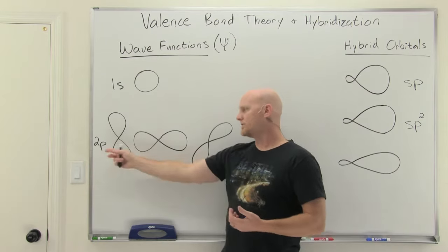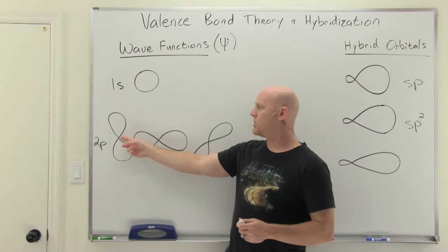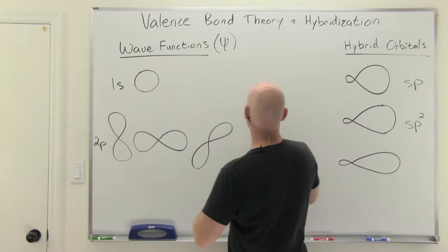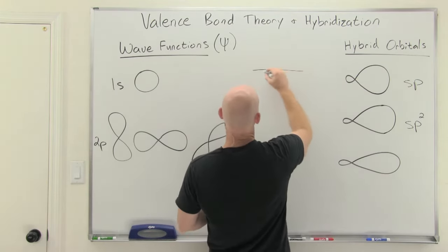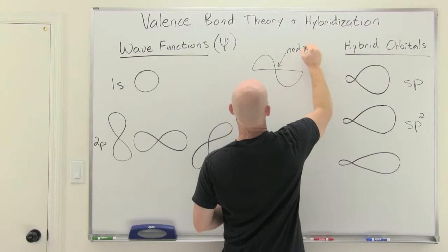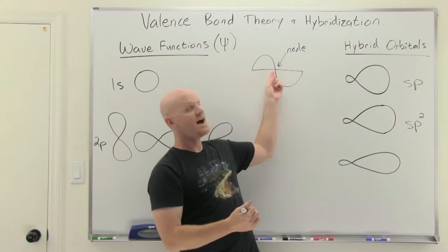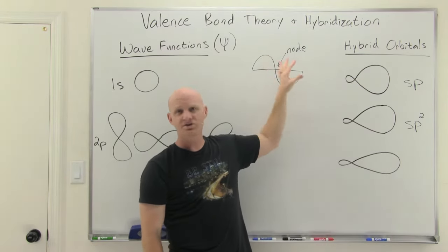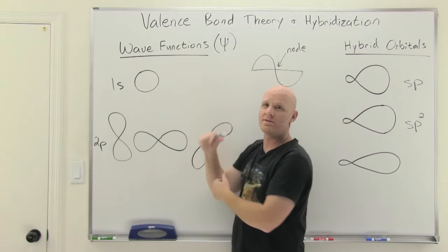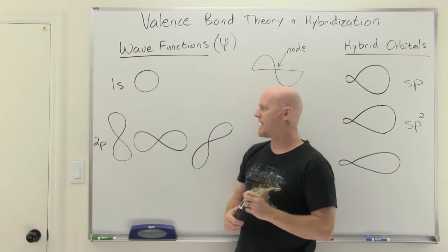For a 2p orbital, these are dumbbell-shaped, and there is what we call a node at the nucleus — a node is just a place where the function goes to zero. You probably remember your sine and cosine functions, which also had nodes. For the sine function, nodes occur at all multiples of pi, where the function has a value of zero. Those were two-dimensional wave equations, but here we have three-dimensional wave equations describing where you find an electron in an atom.